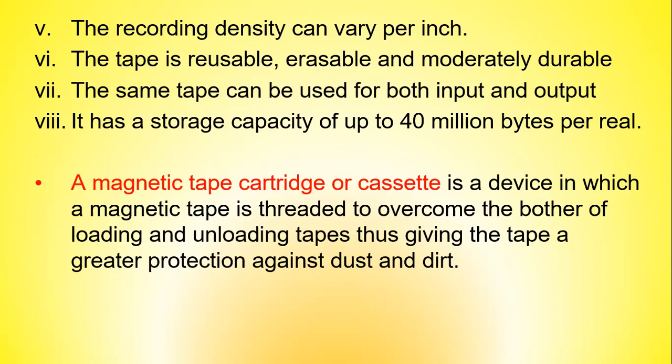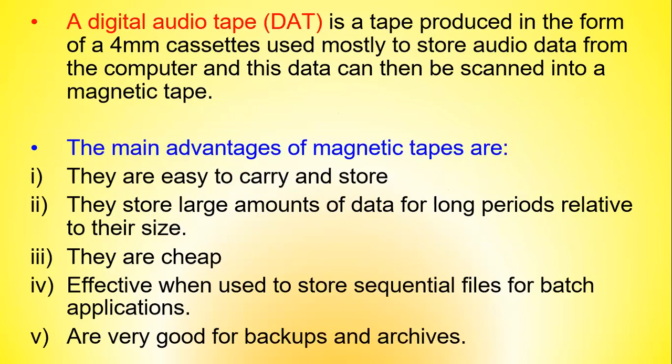A magnetic tape cartridge or cassette is a device in which a magnetic tape is threaded to overcome the bother of loading and unloading tapes, giving the tape greater protection against dust and dirt. A digital audio tape (DAT) is a tape produced in the form of a four-millimeter cassette used mostly to store audio data from the computer.